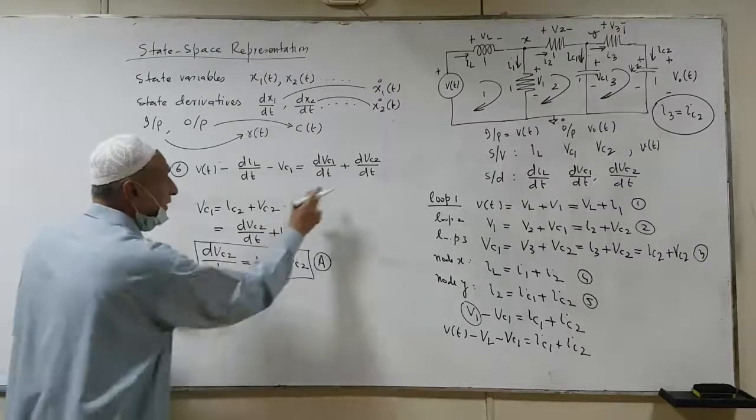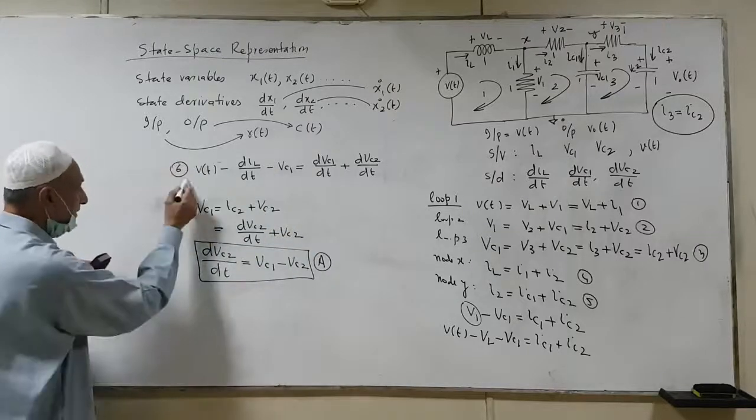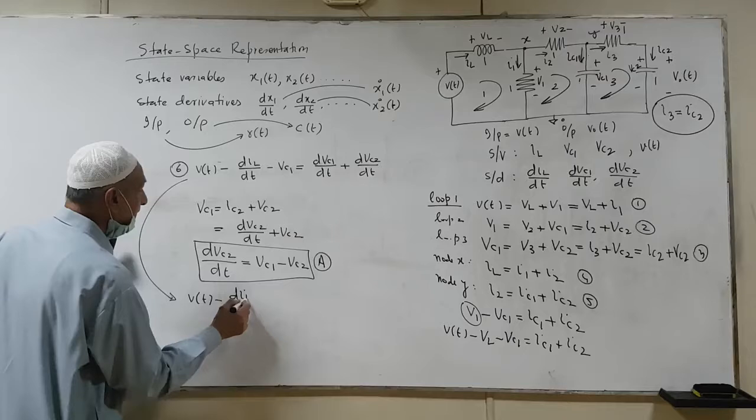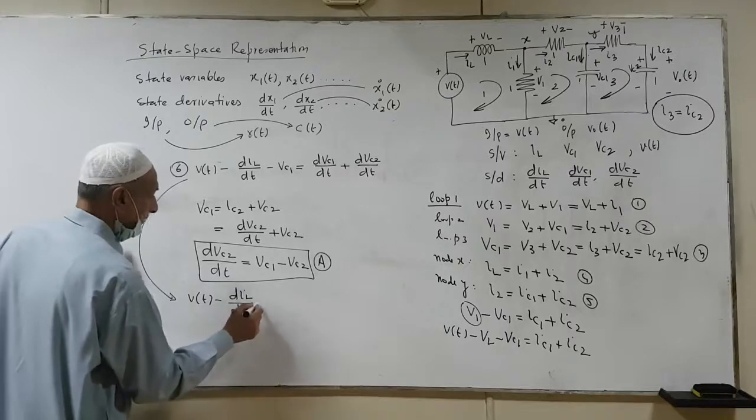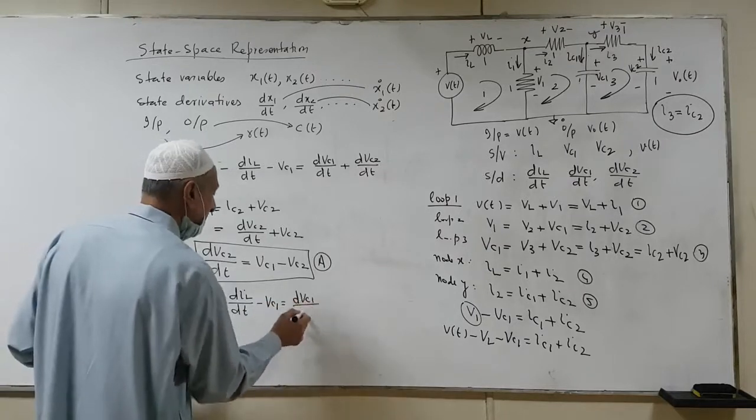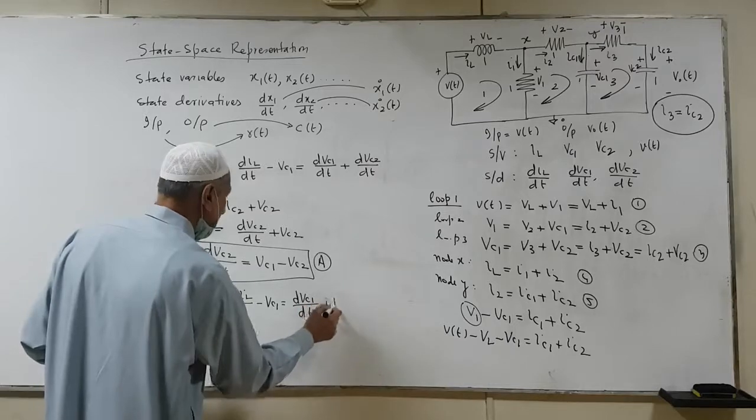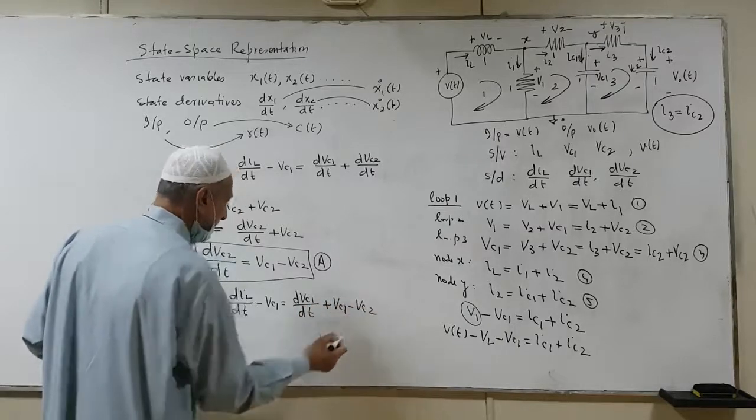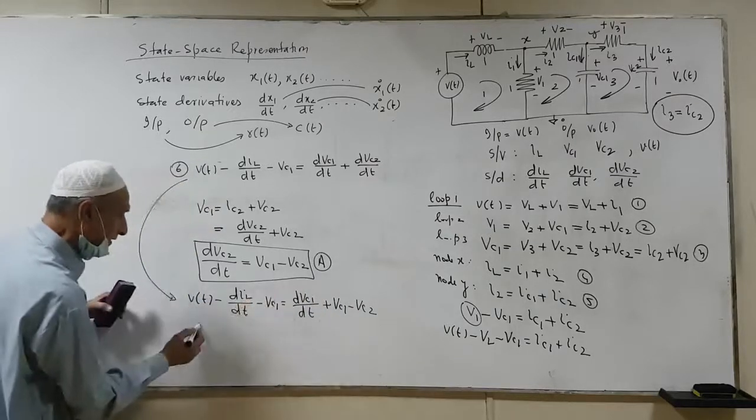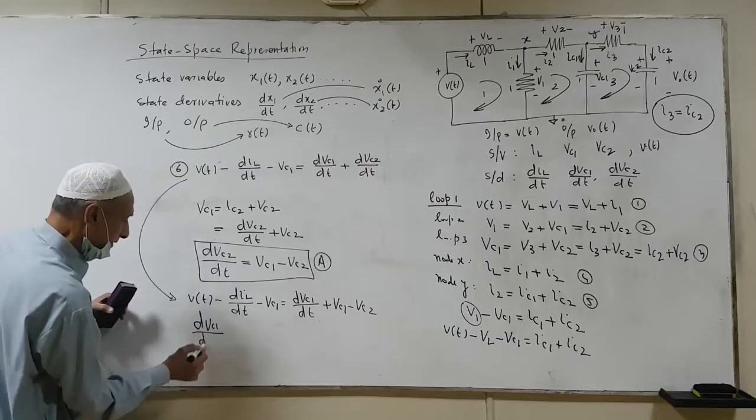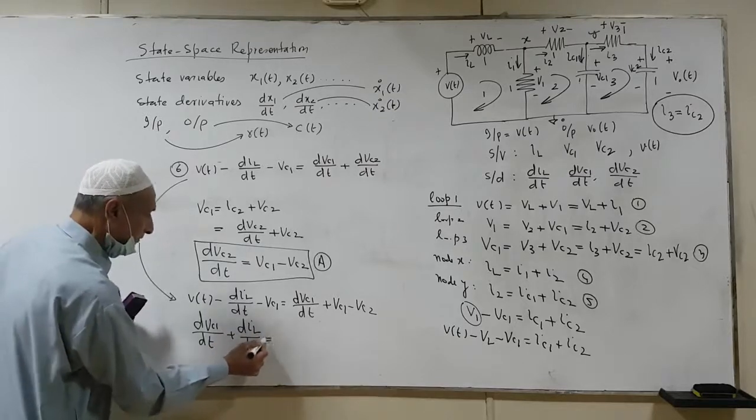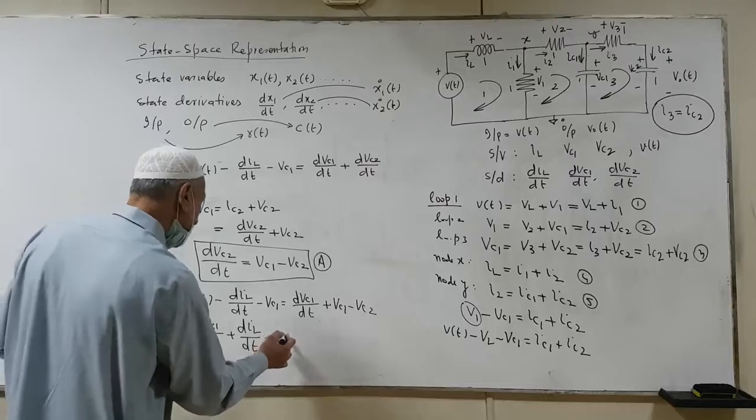Now, if I substitute this over here, what I'll get? This will become dVc2 by dt minus dVc1 by dt minus Vc1 is equal to dVc1 by dt plus Vc1 minus Vc2. So what I can do is take this term on the other side and bring everything on the other side.